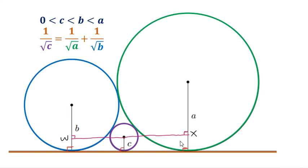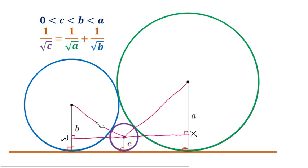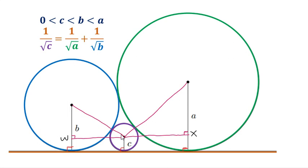I will also connect the centers of the blue and the violet circles so that we will have a right triangle. I will also do the same for the centers of the green and the violet circles. Now let's label some lengths of these triangles. We know that this is A — the radius — this is C, this is also C, and this one is B.